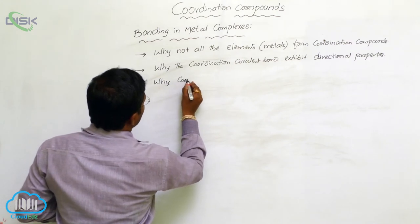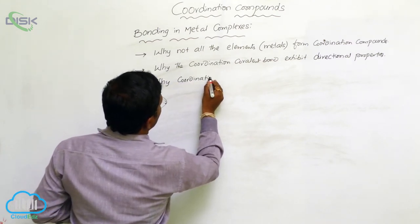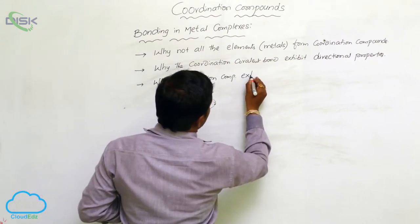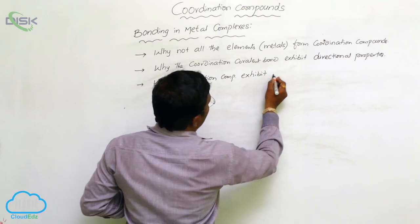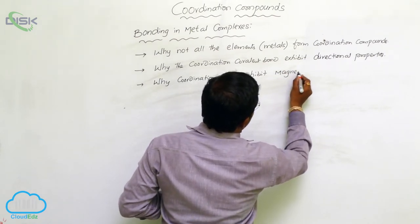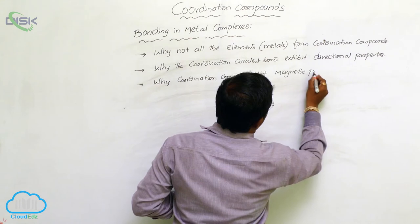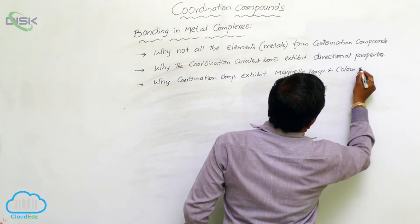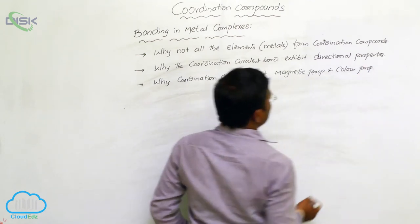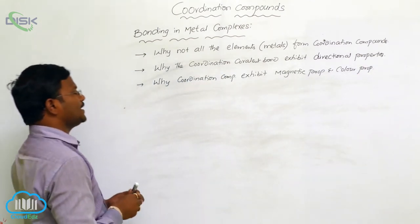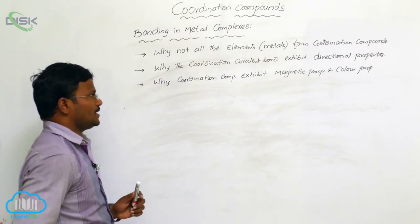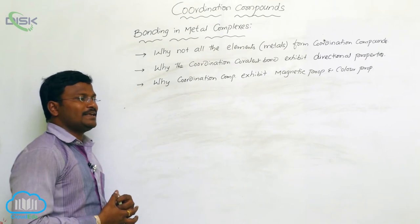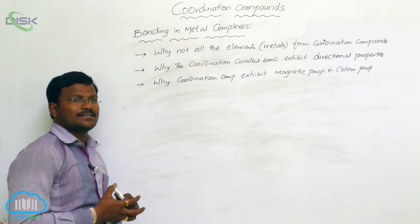Also, why do coordination complexes exhibit magnetic properties and color properties? These are the important and major drawbacks we can identify in Werner's theory. Most of the concepts explained in Werner's theory are satisfied, but some limitations remain.